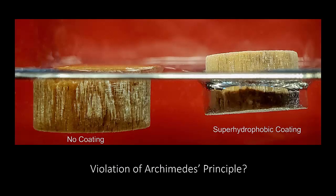In case you thought that was some sort of optical illusion, here's a side view. You can see that the disc with the super hydrophobic coating floats much higher in the water than the uncoated disc. That means that the uncoated disc is displacing more water in order to float. But both discs have the same weight. So how can this be? What's going on?